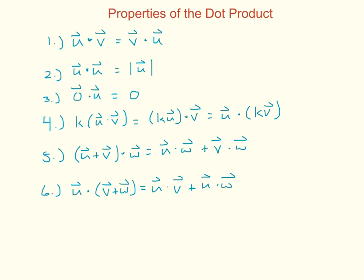First, u dot v is the same as v dot u. When I take a vector and dot it with itself, it is going to be equal to the magnitude of the vector squared. If I dot a vector with the zero vector, I will get zero. If I take a scalar times the dot product of two vectors, I can take that scalar and multiply it by each vector or by one vector and dot it with the other. If I take the sum of two vectors and dot it with a third, I can distribute: u dot w plus v dot w.